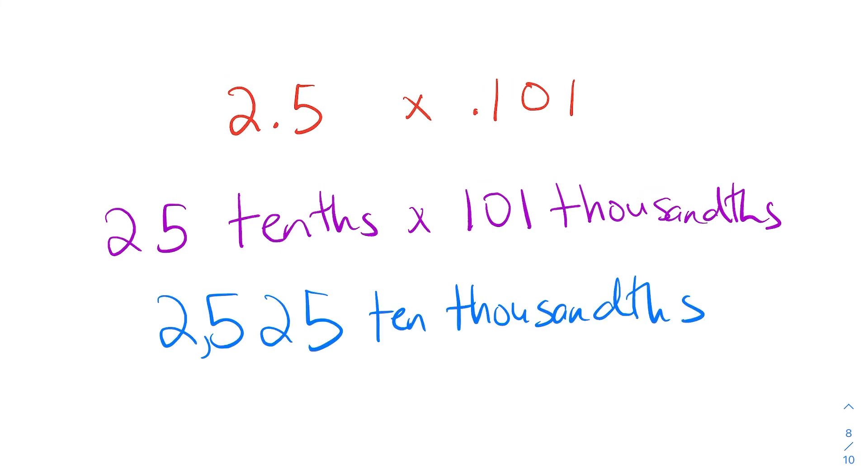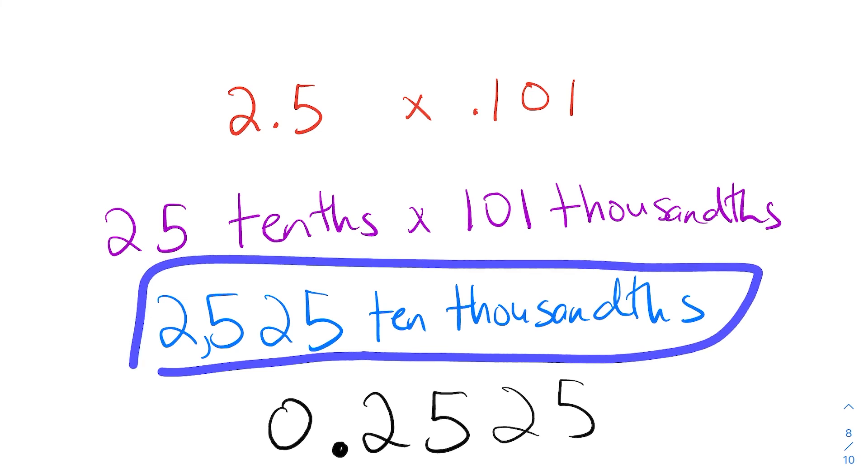Were you able to get 2525 ten thousandths? If so, you got it. Now, what decimal is 2525 ten thousandths? Well, we can start playing around with it. You know that it's about four or five decimal places away because tenths, hundredths, thousandths, ten thousandths. Well, if we've got four digits here, let's try this. Putting the decimal point right there and now let's count. This is tenths, hundredths, thousandths, ten thousandths. Oh, wouldn't you know? The answer is 0.2525 or also known as 2525 ten thousandths.